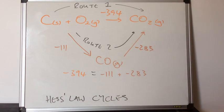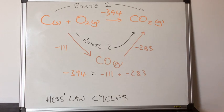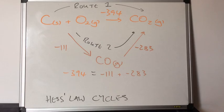Another way to represent this concept is by drawing a Hess's law cycle. Across the top in orange we have route one, with an enthalpy change of minus 394 kJ/mol. Going down and back up the other side is route two, the route through carbon monoxide. The Hess's law relationship shown is: minus 394 equals minus 111 plus minus 283.